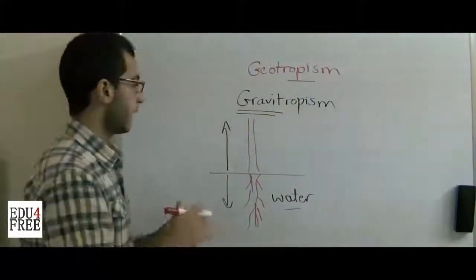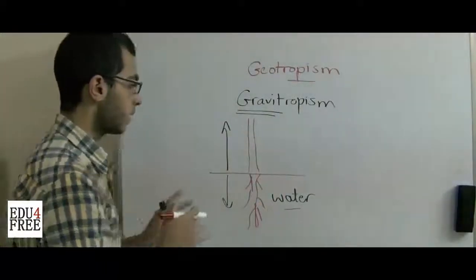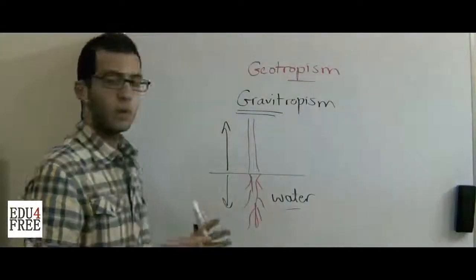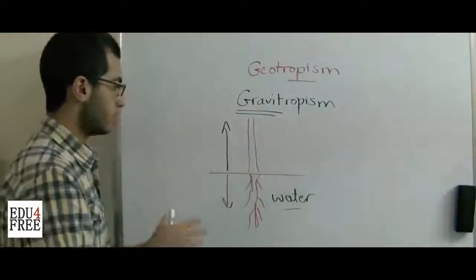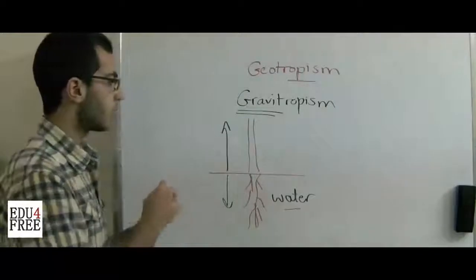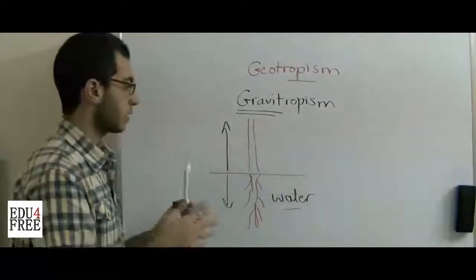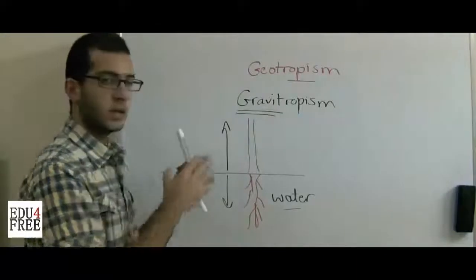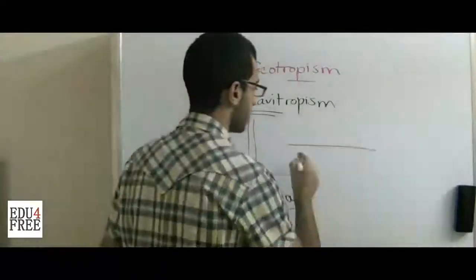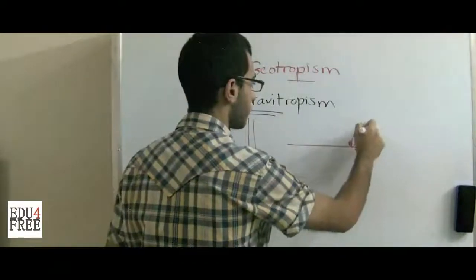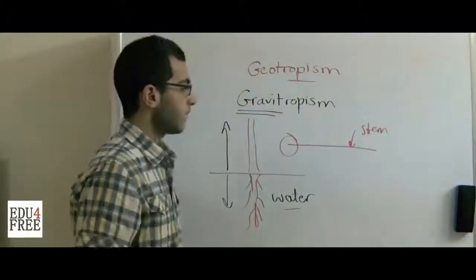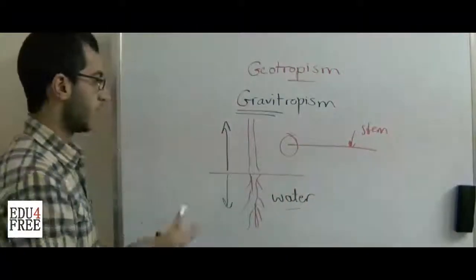What happens if the plant is growing in a horizontal position? We will look at a video of an onion whose stem is growing horizontally — it was growing along a horizontal surface. This is the stem and this is the onion. Then it was put back in a vertical position.